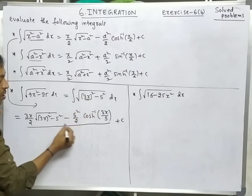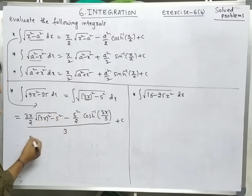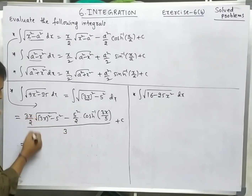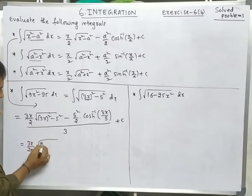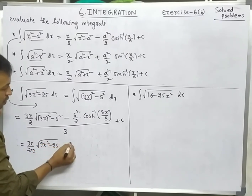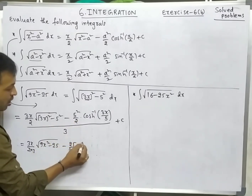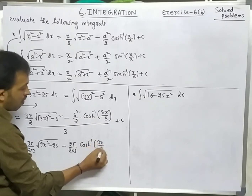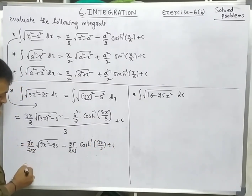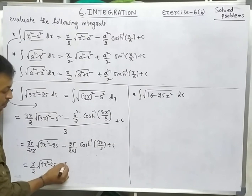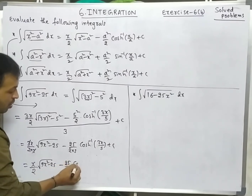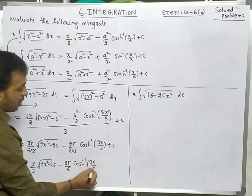Dividing by 3 inside both terms: 3 cancels with 3 in the first term. The final answer is (x/2)·√(9x²-25) - (25/6)·cosh⁻¹(3x/5) + c. Write the coefficient of x in the denominator — that is the important step.